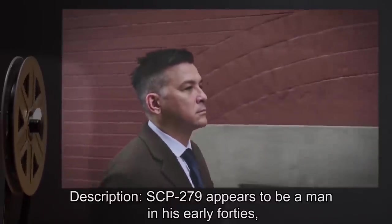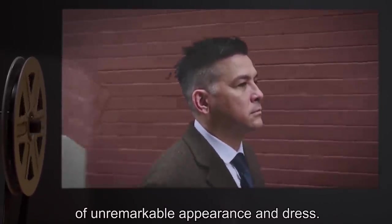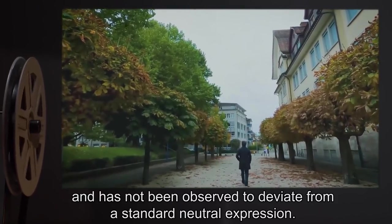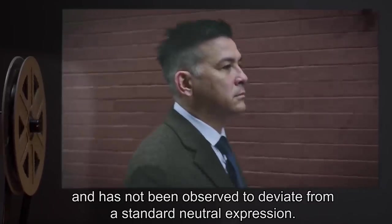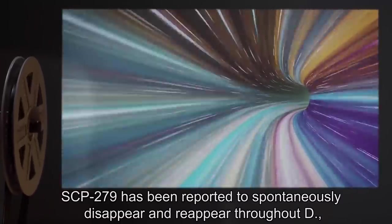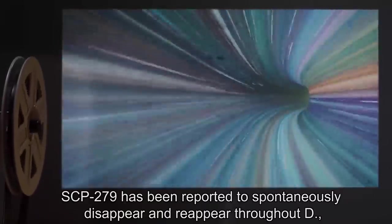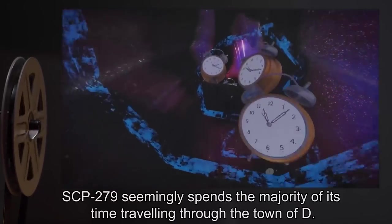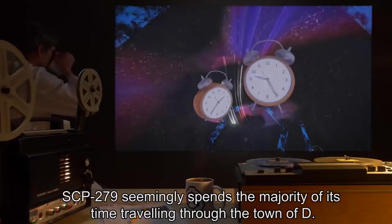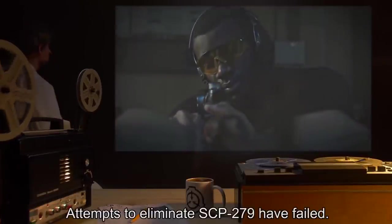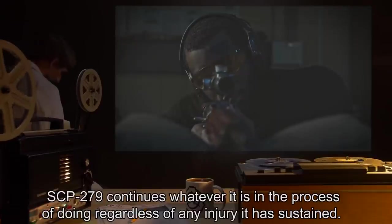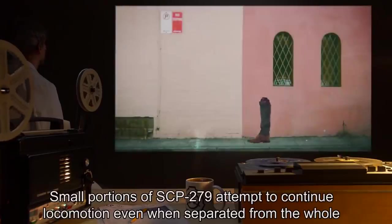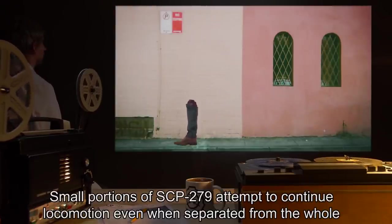Description: SCP-279 appears to be a man in his early 40s of unremarkable appearance and dress. SCP-279 does not respond to any form of external stimuli and has not been observed to deviate from a standard neutral expression. SCP-279 has been reported to spontaneously disappear and reappear throughout [REDACTED], presenting unusual difficulties to agents required to monitor it. SCP-279 seemingly spends the majority of its time traveling through the town of [REDACTED]. Attempts to eliminate SCP-279 have failed. SCP-279 continues whatever it is in the process of doing regardless of any injury it has sustained. Small portions of SCP-279 attempt to continue locomotion even when separated from the whole.